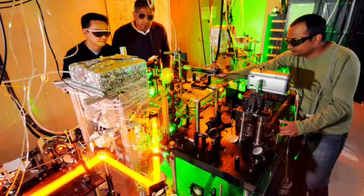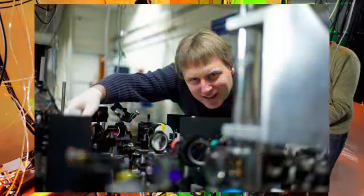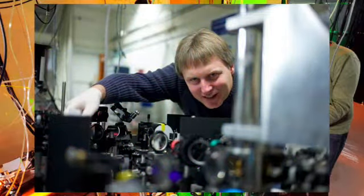Magnons, or electron spin waves, can be controlled by magnetic fields. Densities from the limit of a dilute gas to a strongly interacting Bose liquid are possible. Magnetic ordering is the analog of superfluidity.